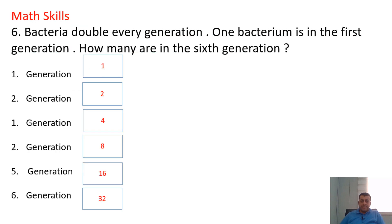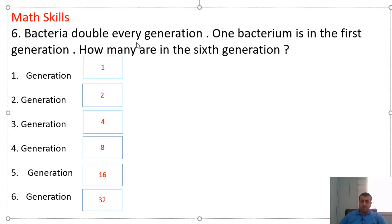Question six: bacteria double every generation. One bacterium is the first generation. How many are in the sixth generation? Generation 1: 1. Generation 2: 2. Generation 3: 4. Generation 4: 8. Generation 5: 16. Generation 6: 32. The answer is 32 bacteria in the sixth generation.